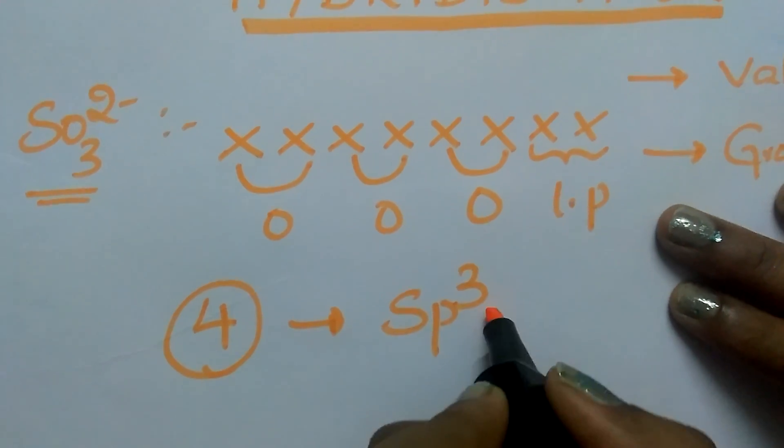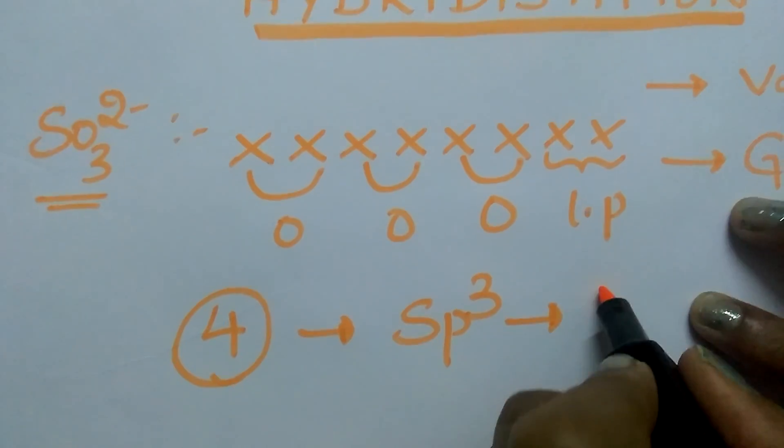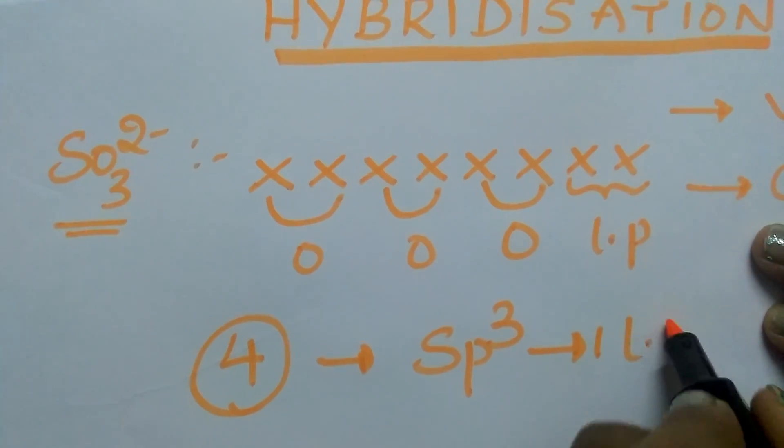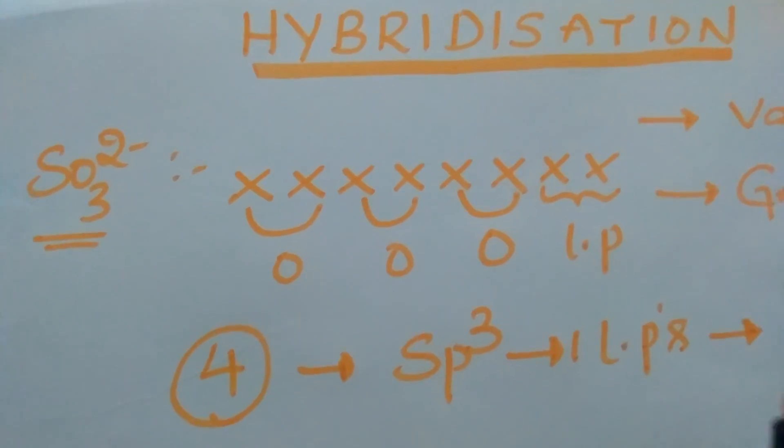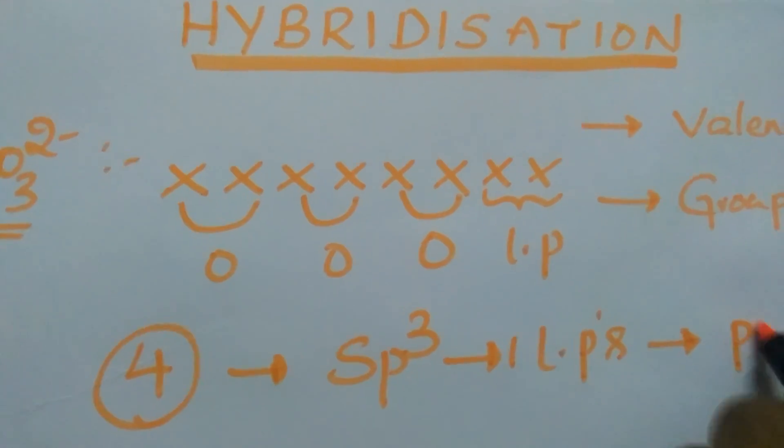1 plus 3 equals 4. sp3 hybridization with one lone pair of electrons, according to VSEPR theory, the shape of the molecule is pyramidal.